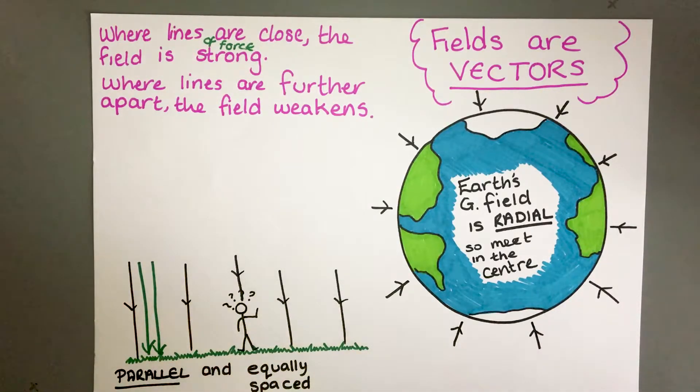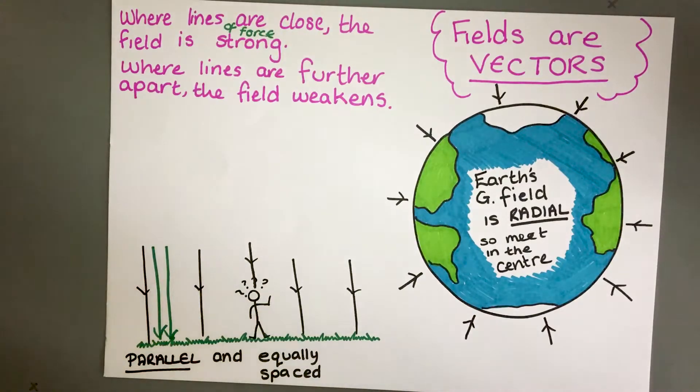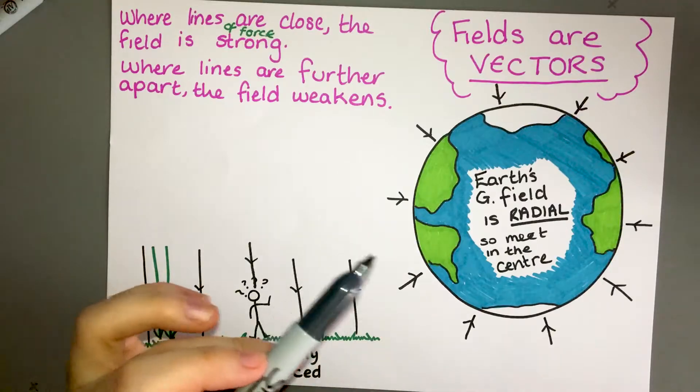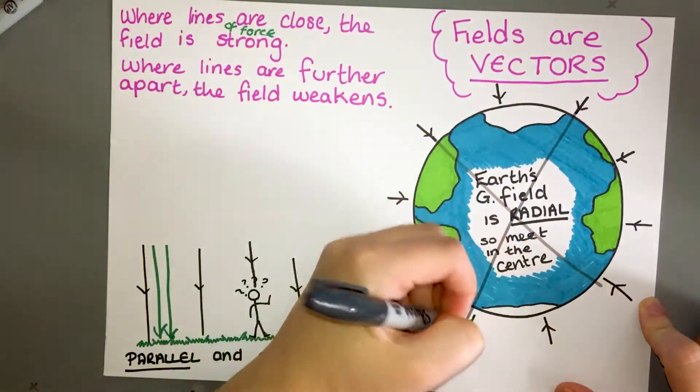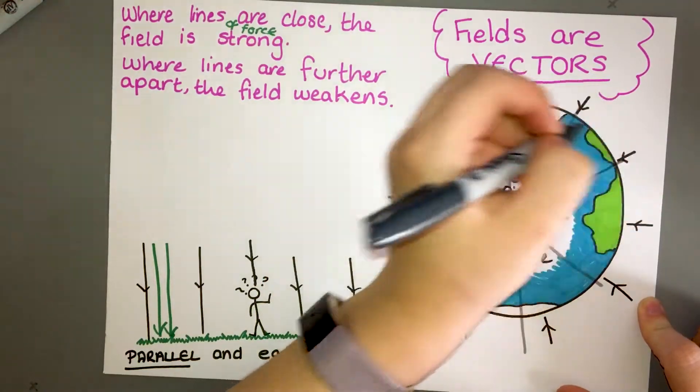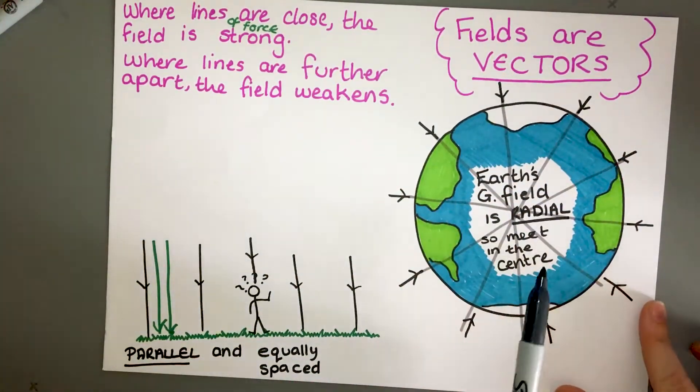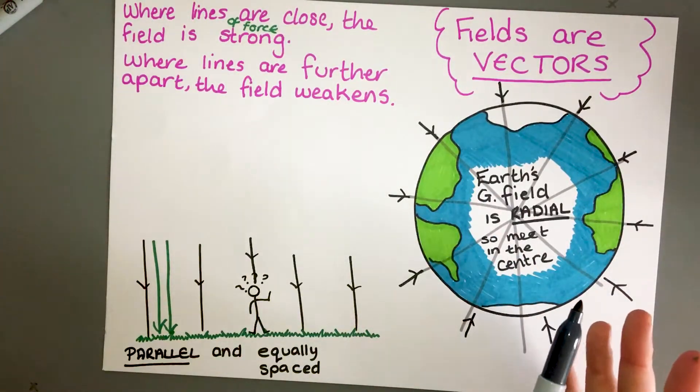On earth the field is almost uniform which means because it's pretty much flat in most places on earth we consider the lines to be almost uniform, parallel and equally spaced apart. As well as that we have to consider that the earth's gravitational field is radial, so if we were to draw the lines going all the way through they should cross over in the center. They all point to the center of the object because it's a uniform object.